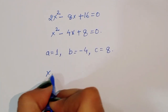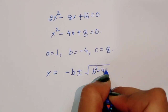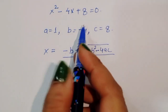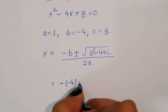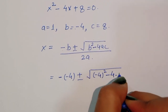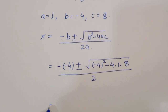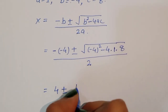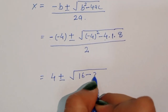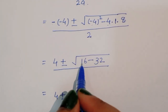Now we apply the quadratic formula: x equals minus b plus or minus square root of b square minus 4ac, divided by 2a. Substituting: minus of minus 4, plus or minus square root of minus 4 square minus 4 times 1 times 8, divided by 2. This gives 4 plus or minus square root of 16 minus 32, divided by 2, which is 4 plus or minus square root of minus 16, divided by 2.